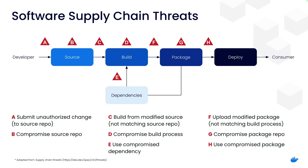Therefore, every stage of the software supply chain needs to be trustworthy and you need to be able to securely trace all the code you use and artifacts that you build. In other words, it is vital to implement robust security measures throughout the Software Development Life Cycle, to safeguard against a wide spectrum of threats that can compromise the integrity of the software supply chain, from secure local development environments, to the build and deployment processes, and continuing through to the ongoing monitoring of released software.